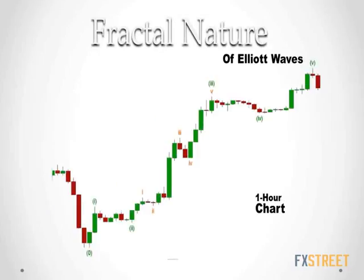On the one-hour chart, we can see that Wave 3 green is subdividing into a five-wave structure. If we look closely, we can notice two more things: Wave 3 orange can clearly be seen subdividing into a five-wave structure as well. Can you see a five-wave structure within Wave 5 green? So if you're not sure of the structure of Wave 3 orange, let's go into a smaller time frame — how about a 15-minute chart?